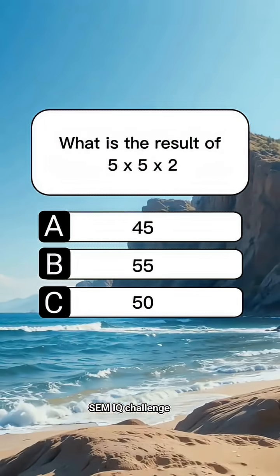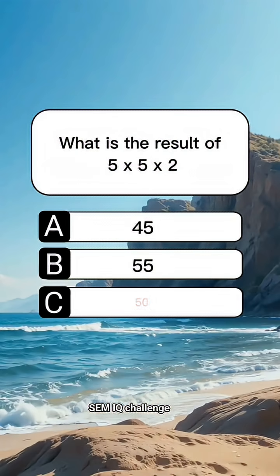What is the result of 5 times 5 times 2? Answer C, 50.